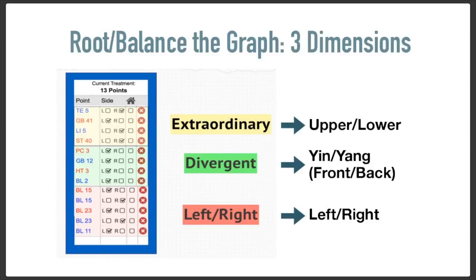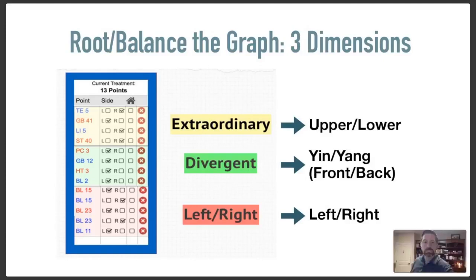If the graph is really, really messy, I would do extraordinary and divergent. If I'm further along in a treatment process and we're beginning to unravel portions of what's going on, I might drop the divergent treatment and just do the extraordinary. And I would choose extraordinary just like I would have chosen extraordinary any time before. Sometimes I will use just extraordinary, and that will be my route of balancing the graph, and then I will move on.